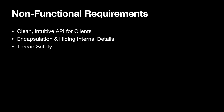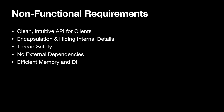Another super important requirement: we shouldn't have any dependencies on third-party libraries. Depending on external libraries can lead to version conflicts or bloat our code. Instead, use native frameworks like URL session on iOS as much as possible. We should also prioritize efficient memory and disk use. And finally, the library needs to be flexible and extensible.